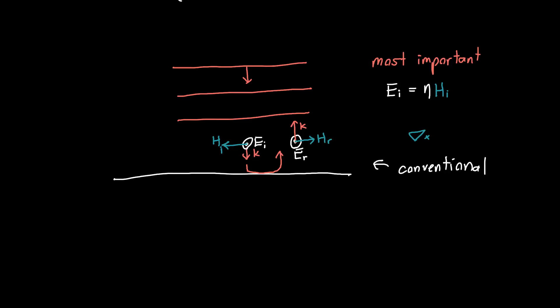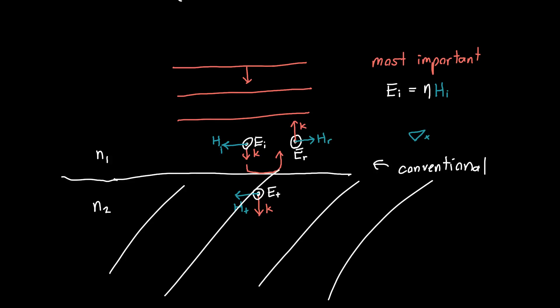The wave isn't just going to reflect — it's also going to have a component that transmits through the interface. For the transmitted wave, everything is still pointing in the same exact directions: H is still off to the left, E is still pointing towards us. We label these HT and ET. Let's say both materials are non-magnetic — one has refractive index N1 and the other has refractive index N2.